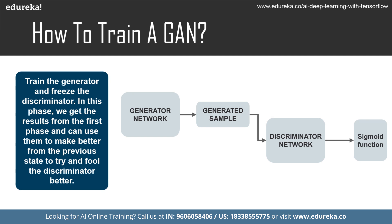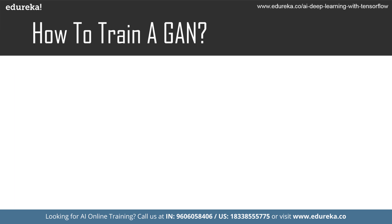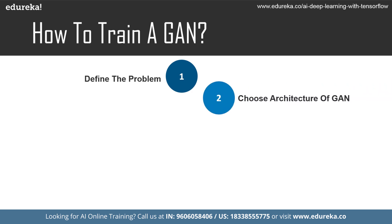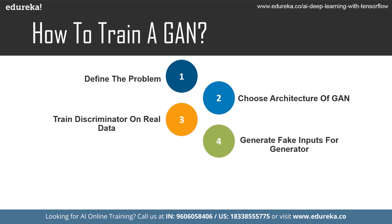Here are the practical training steps in layman's terms. Step 1: define the problem and collect the data. Step 2: choose the GAN architecture suited to your problem. Step 3: train the discriminator on real data to predict them as real for N number of epochs. Step 4: generate fake inputs from the generator — producing fake samples from the generator network. Step 5: train the discriminator on fake data so it predicts generated samples as fake.